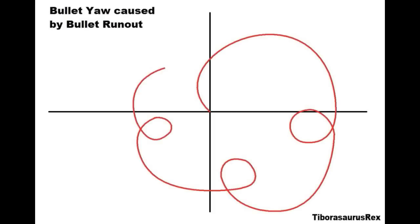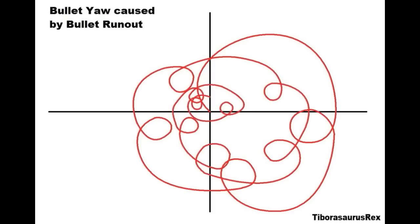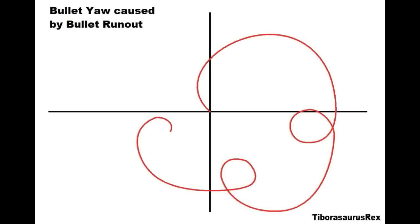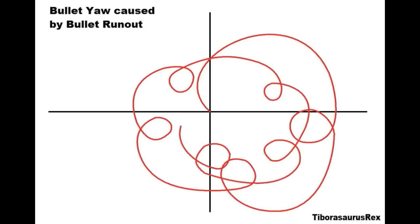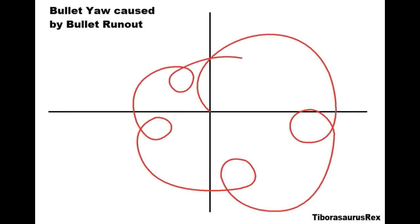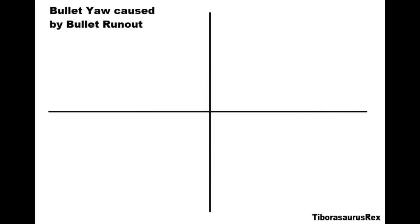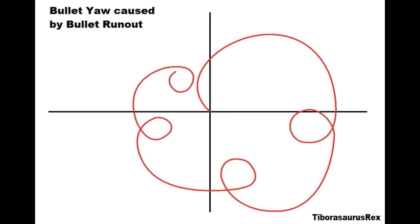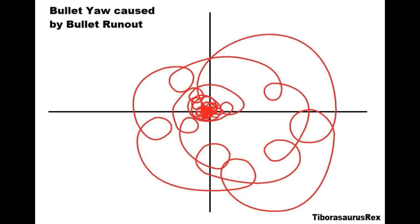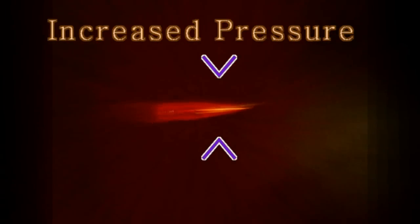So when that bullet exits the muzzle it's immediately going to encounter some yaw. If you follow the nose of the bullet as it's spinning — bullets spin at about 200,000-plus RPMs depending on your twist and muzzle velocity — and you slow it down and track where that nose is pointing off its axis, it'll make an interesting pattern. The yaw kind of spirals around and does little circle patterns around the X and Y axis. After a certain point the yaw will begin to be dampened out by aerodynamic effects.